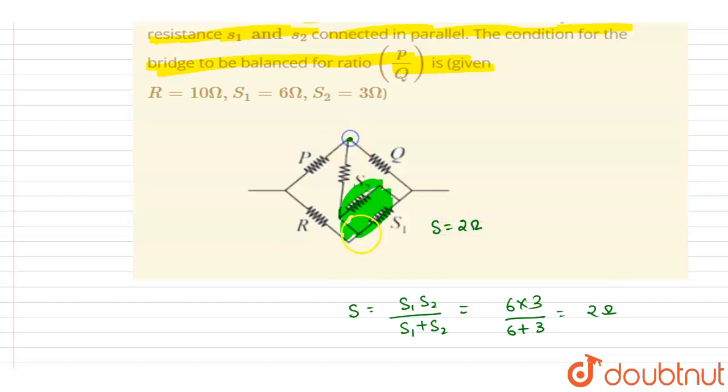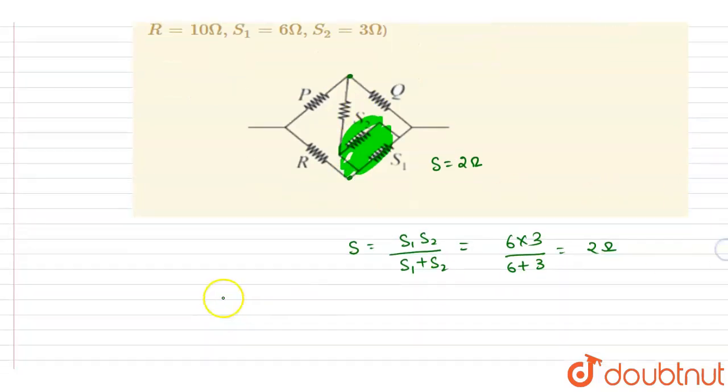Now we know that for a Wheatstone bridge to be balanced, the condition is the resistance P by resistance Q equals resistance R by resistance S. This is the condition for Wheatstone bridge.